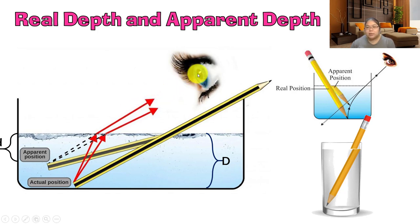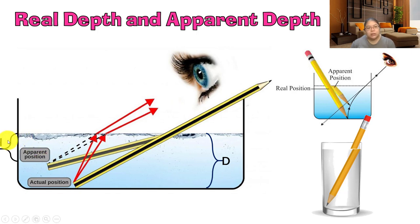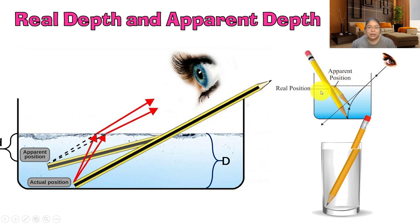The ray then goes to the observer's eyes. The observer's line of sight goes back through the water, and where the two lines cross and overlap, that point represents the image. So the observer sees the pencil at the image position - this is what we call the apparent depth. The actual depth of the pencil to the bottom is the real depth. If you want to touch the pencil, you need to go a bit deeper because what you see is just the image.